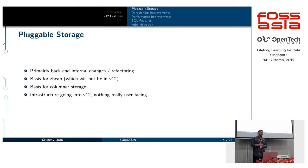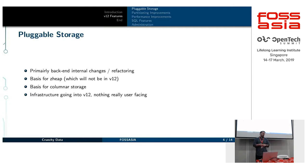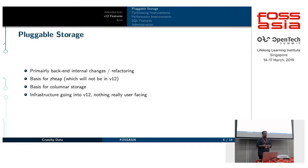Traditionally in Postgres, we have MVCC and only what typical database people would consider a redo log — a write-ahead log where in the event of a crash we go to the last checkpoint and play forward. Some other database systems have an undo log, which allows you to go backwards. Postgres hasn't supported that because our MVCC means every update is actually an insert and a delete. Part of the re-architecture is to allow an alternative heap format with both a redo log and an undo log, because for certain query and update patterns that's nicer than the insert-and-delete MVCC model we have today.